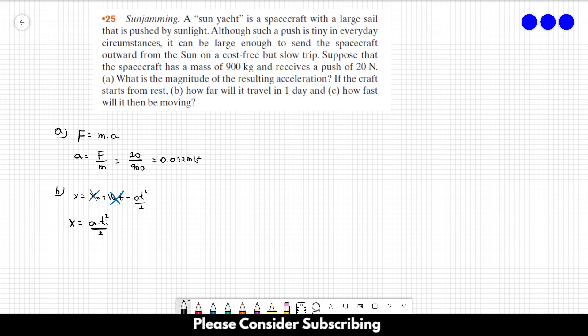We already have the acceleration, so we have to find T, which is one day. So in one day, we have 24 hours. And in one hour, we have 60 minutes. And in one minute, we have 60 seconds. So this is equal to 86,400 seconds. So this is T.